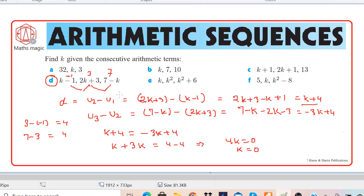The solution for this part d is k equals 0, which is satisfying the arithmetic sequence which we have. Therefore, the answer for k is equal to 0.